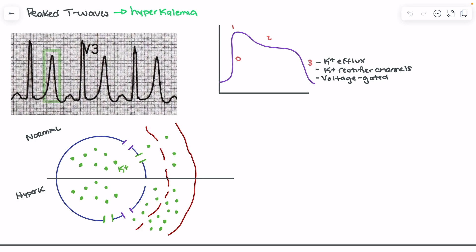Two important channels to discuss here: the rectifier potassium channels, which drive phase three, and potassium leak channels, which are open all the time. These open leak channels are why potassium primarily drives our resting membrane potential — potassium can move freely based on its electrical and chemical gradients, establishing our normal resting membrane potential of approximately negative 90 millivolts.